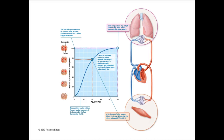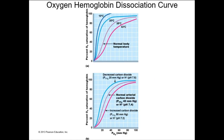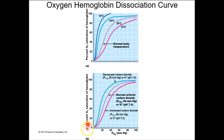On the recording I'll walk through what this means once, and then in real world we're going to go through it several times. You've got your standard curve — the standard rate, normal temperature, normal environment, normal acidity — and that's going to be your normal rate of oxygen-hemoglobin dissociation.